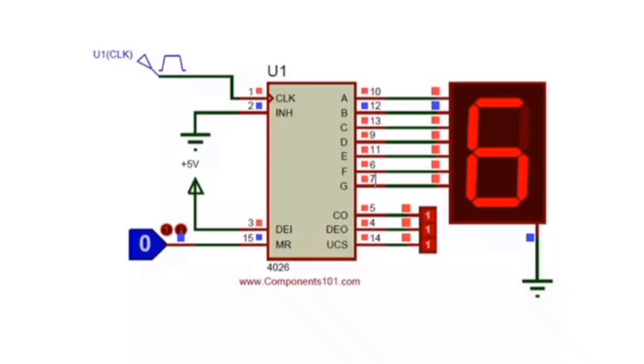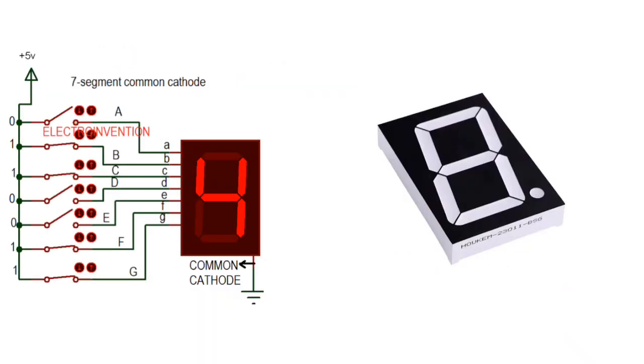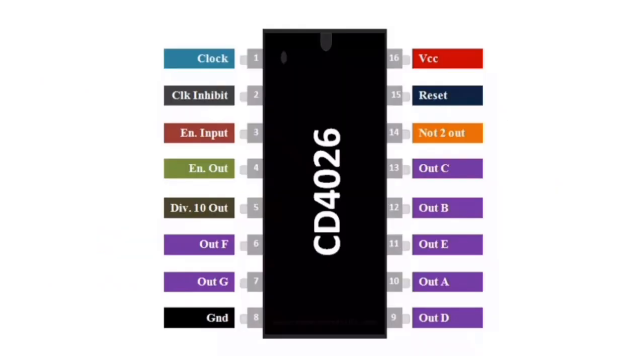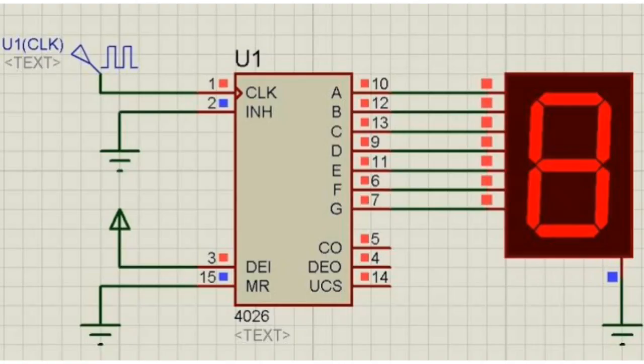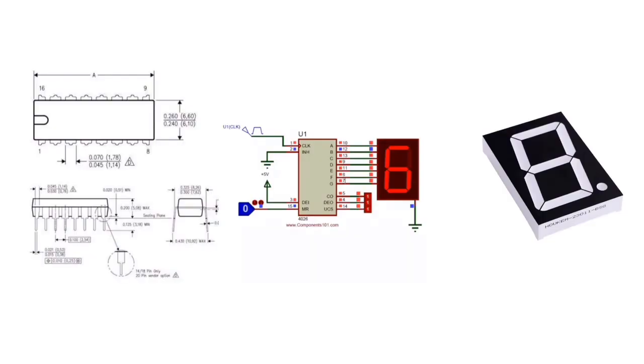This 16-dip IC is a decade counter that counts in decimal digits, 0 to 9. The CD4026 decade counter IC is used to display numbers on 7-segment displays and increments the number by 1 when a clock pulse is applied to its pin 1. The higher the clock pulse rate, the faster the numbers change in the 7-segment display.